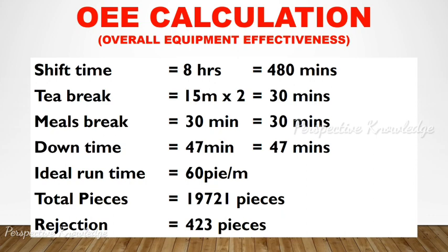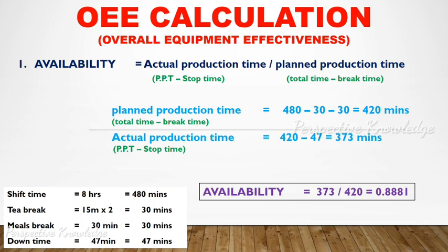Now we will see how to calculate. First, calculate availability: actual production time divided by planned production time. Actual production time equals planned production time minus stop time. The planned production time is 480 minutes minus 60 minutes of breaks, which equals 420 minutes. Actual production time is 420 minus 47 downtime minutes, which equals 373 minutes.